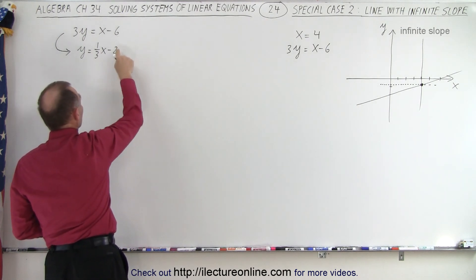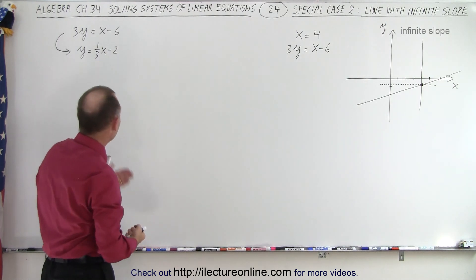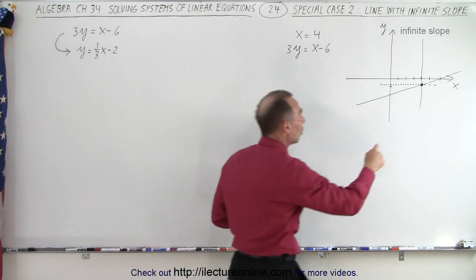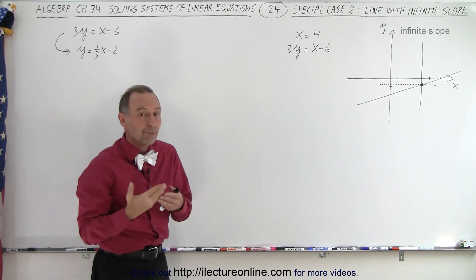So when we change the equation into this form, we can clearly say that it has a slope of 1/3 and an intercept of minus 2. And you can see that those two lines do indeed intersect one another, so therefore there must be a solution.